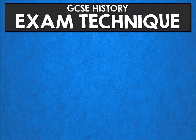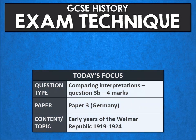Hey everybody, welcome back to another GCSE History exam technique tutorial. Today we are going to be looking at question 3b, that's the comparing interpretations question on paper 3. And we are going to focus on the early years of the Weimar Republic.